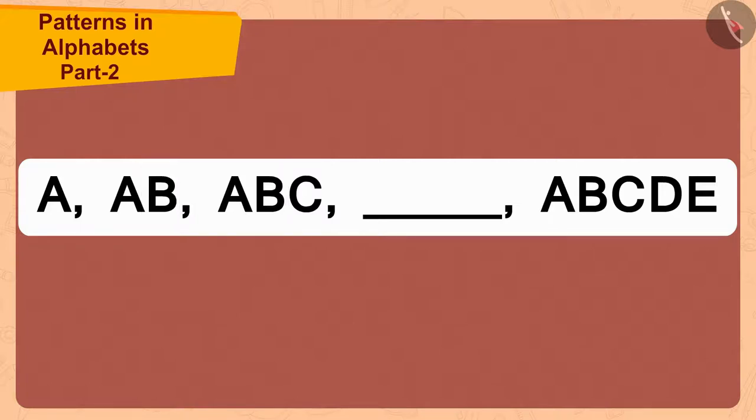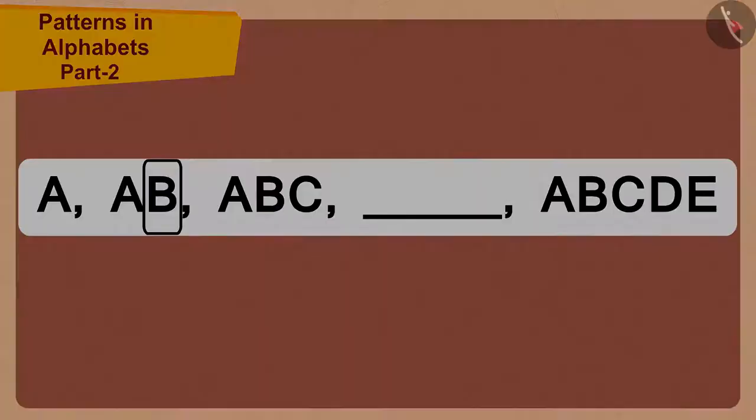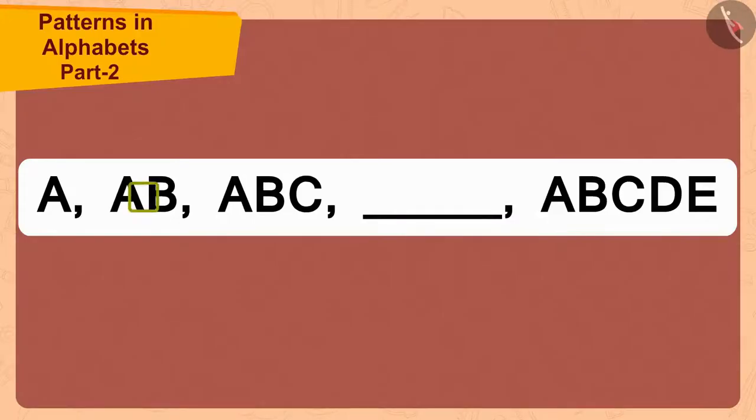The first letter is A. The next time A is repeated, B is added to it. And when A, B, both these letters are repeated, then the next letter C was added to it.